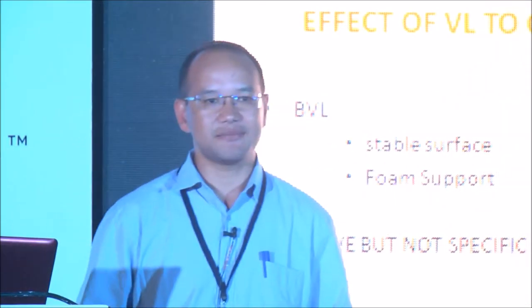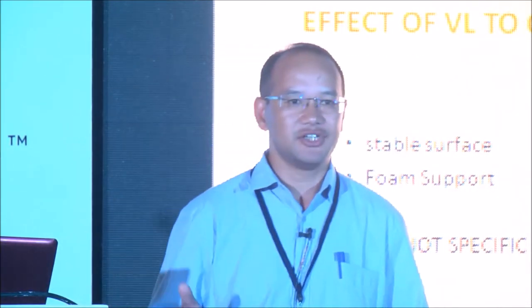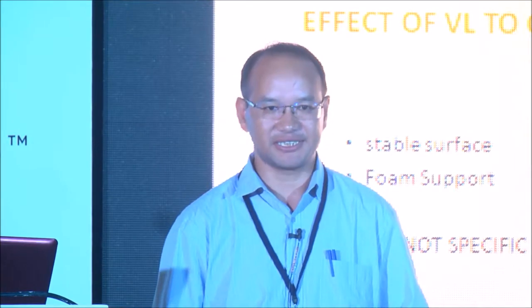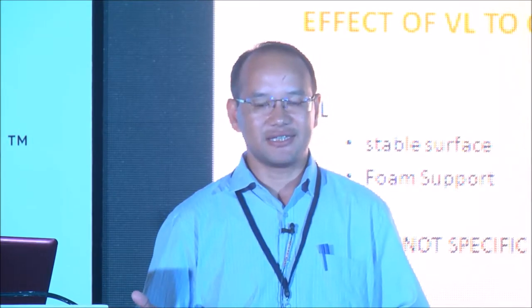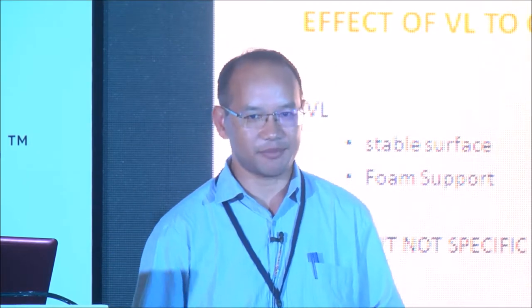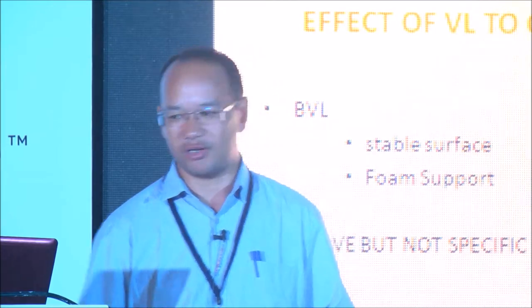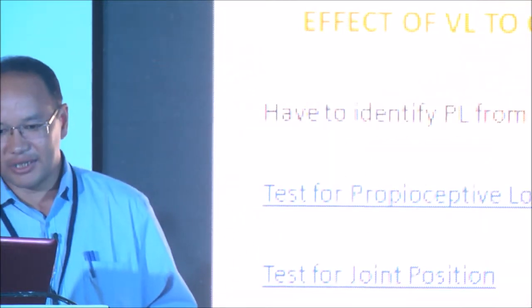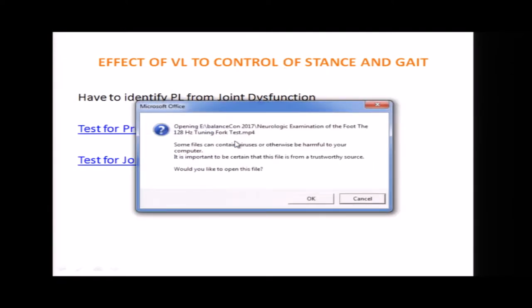If the person has a proprioceptive loss, they will stand on a solid firm base, close their eyes, and still not be able to maintain balance — because proprioception from the lower limb is poor. To identify proprioceptive loss, you use simple, cheap, and readily available tests — the tuning fork vibration test and the joint position test.